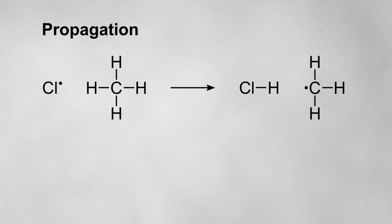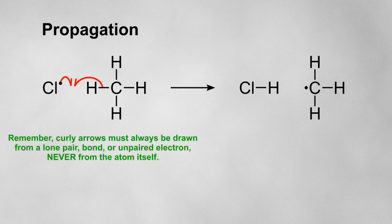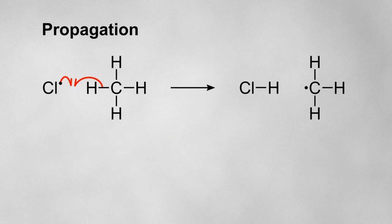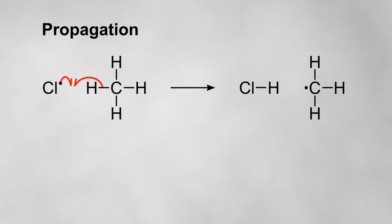The chlorine radical rips a hydrogen atom off of methane to form hydrogen chloride and leaves behind a methyl radical. We can show the new bond forming between the chlorine radical and the hydrogen atom like this, with a single electron from each atom coming together to form a shared pair of electrons, or, in other words, a covalent bond. The remaining electron that was originally in the shared pair between the carbon and the hydrogen will go back onto the carbon atom to leave the methyl radical.